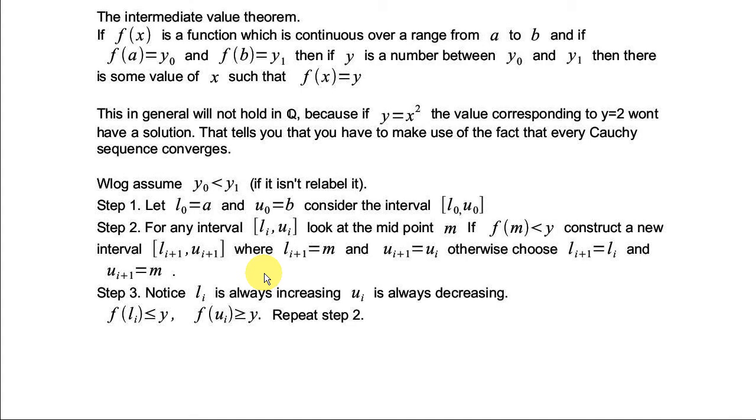So what you're getting is, if you notice, there's a sequence of li and ui, and li is always increasing and ui is always decreasing, and in particular, f of li is always less than or equal to y, and f of ui is always greater than or equal to y. And you just repeat this process indefinitely, and you'll get this sequence of li and ui, which we'll then use on the next page.